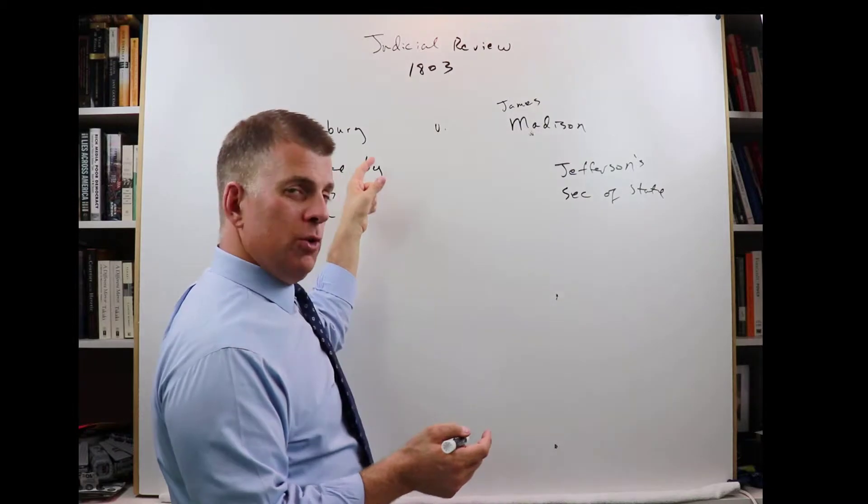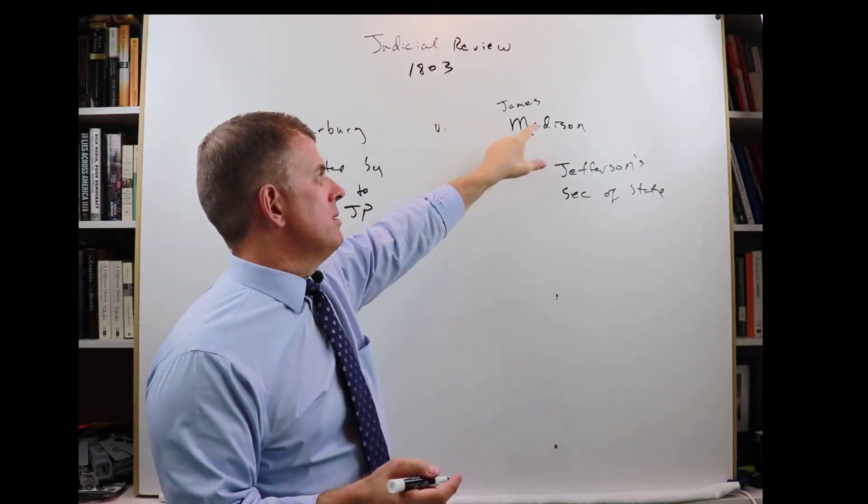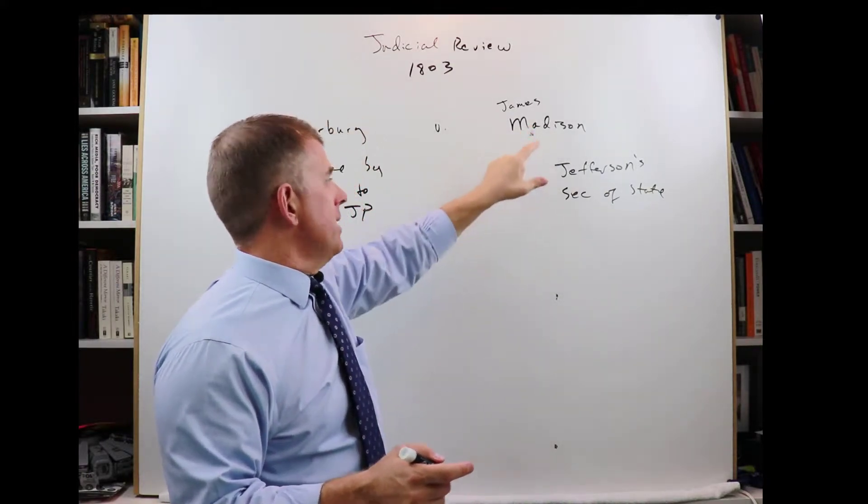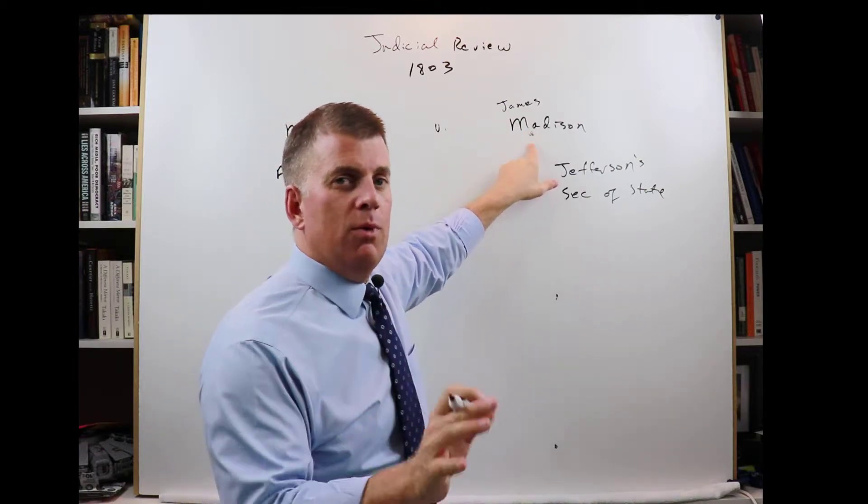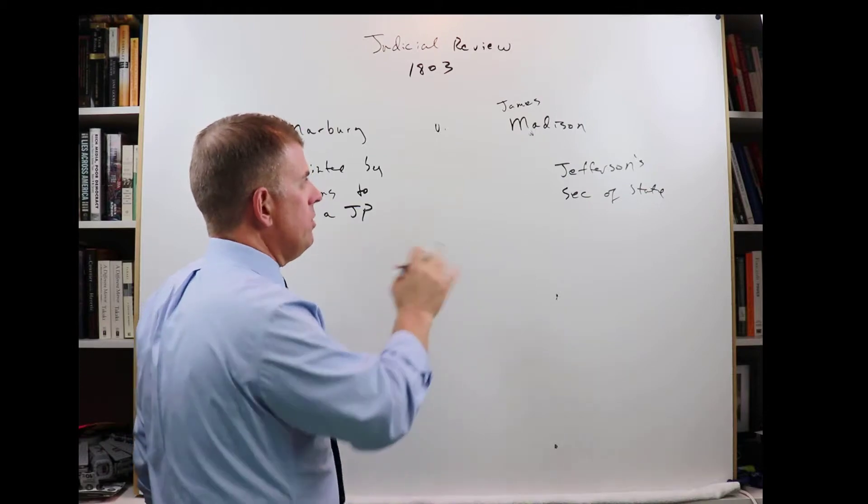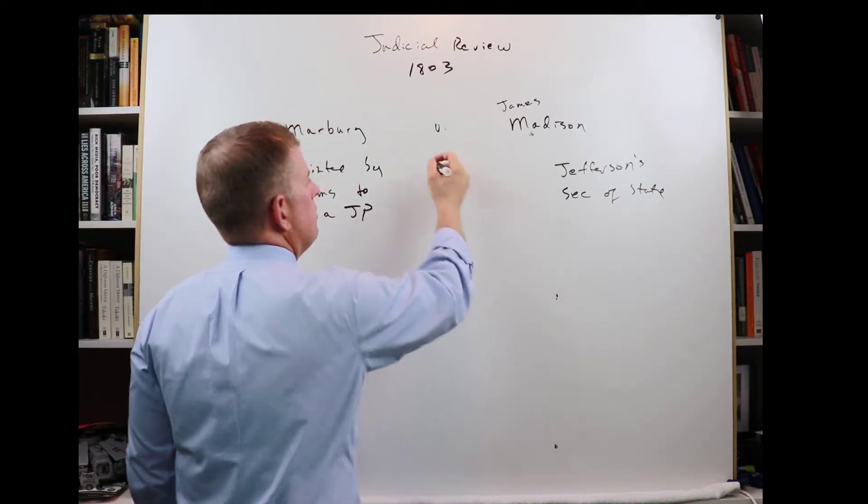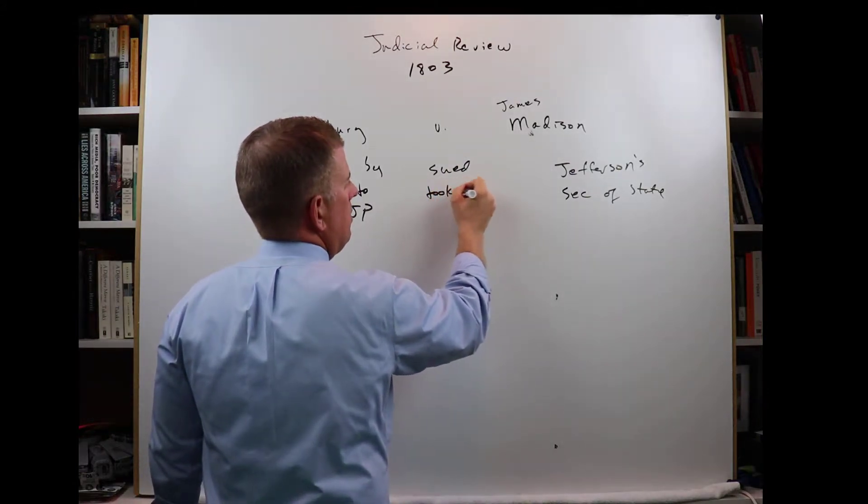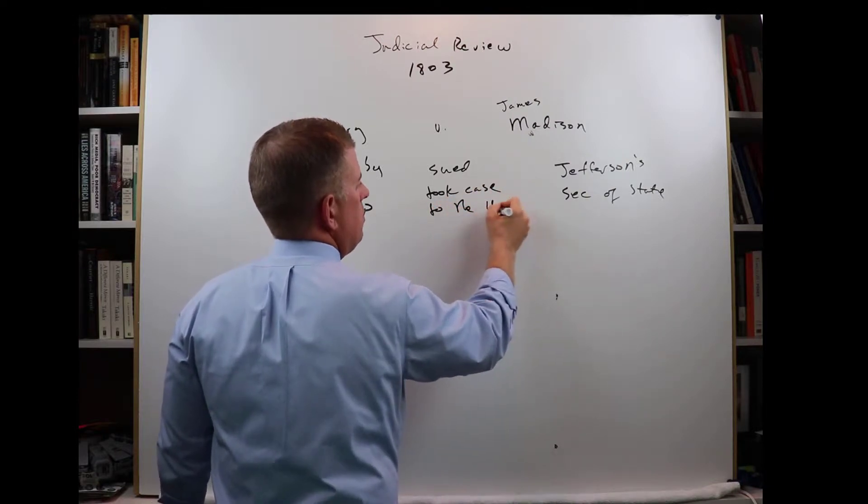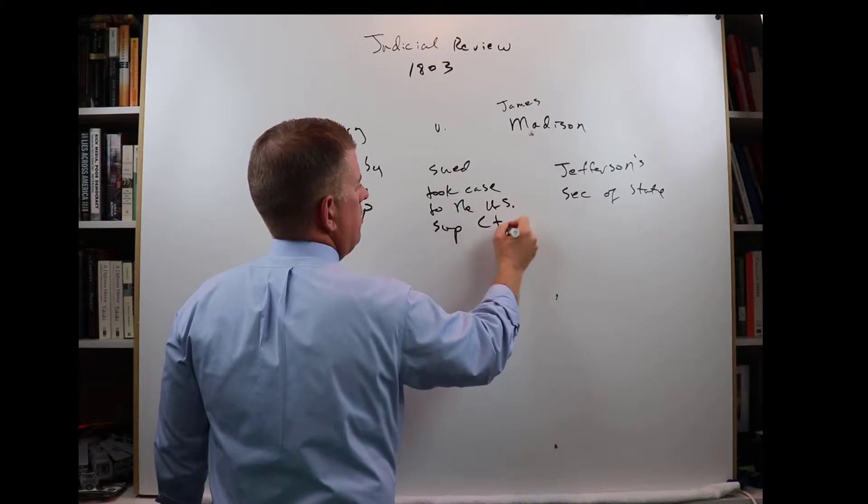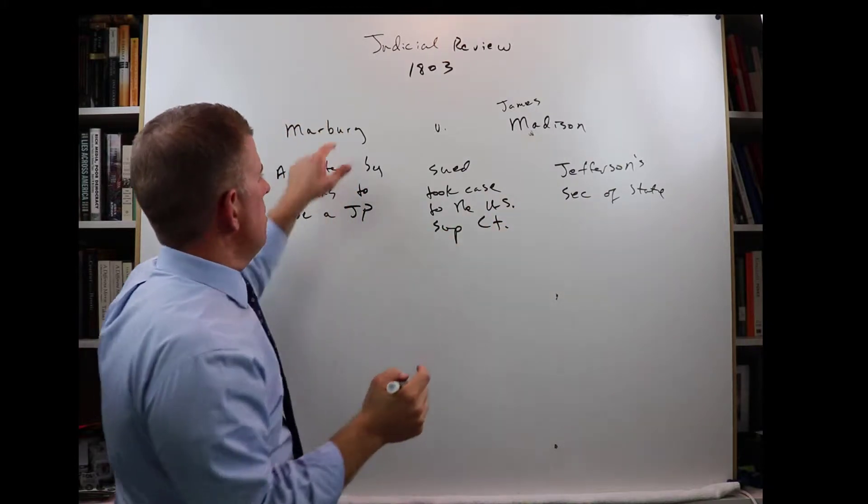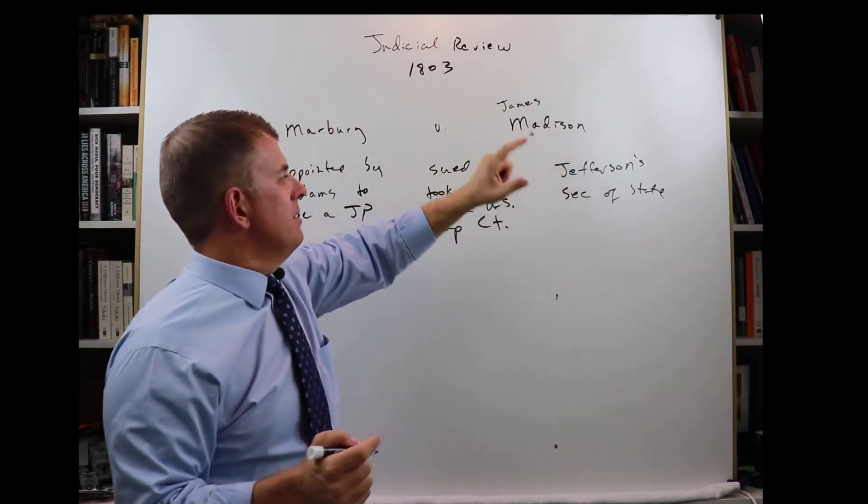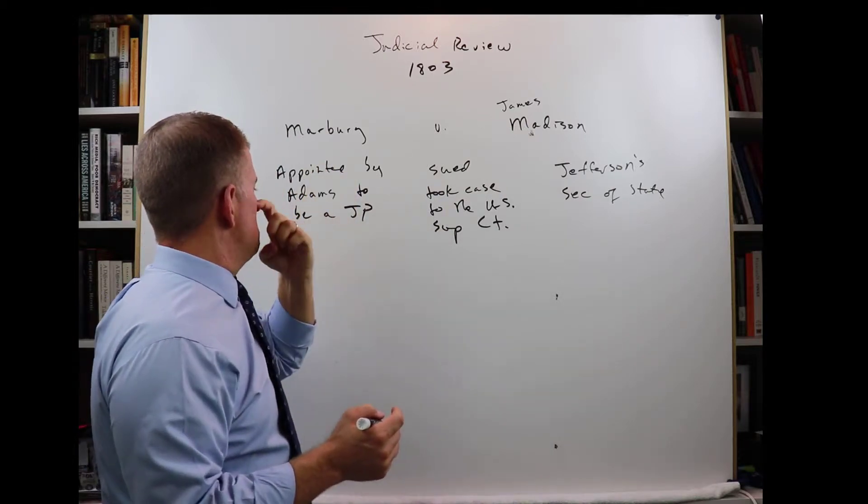Well, Marbury didn't like that. So he sued Madison to say that Madison had to file the paperwork. He wanted a court to say Madison had to file the paperwork. So Marbury versus Madison, that's the basis for the case. And he sued and took the case to the U.S. Supreme Court to force the Supreme Court to force Madison to file the paperwork so he could have the job that Adams had appointed him to.